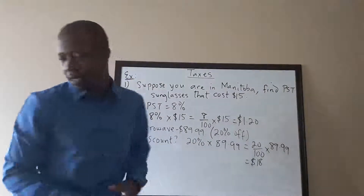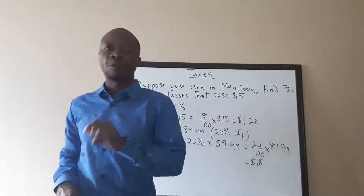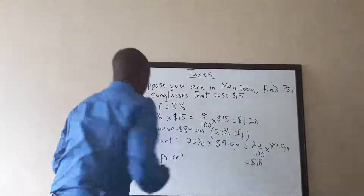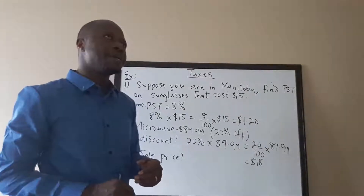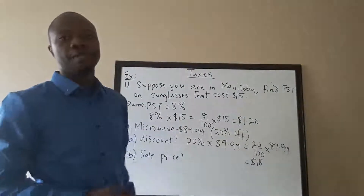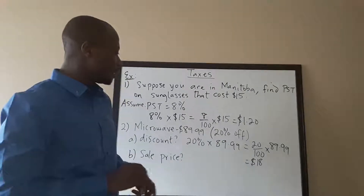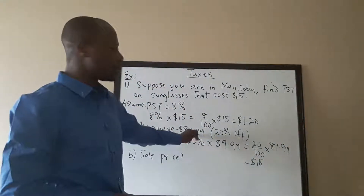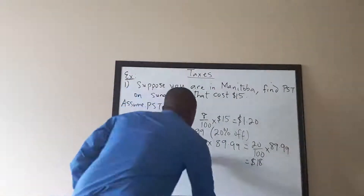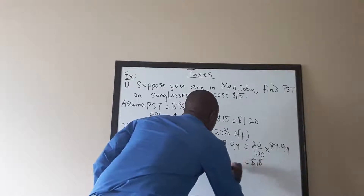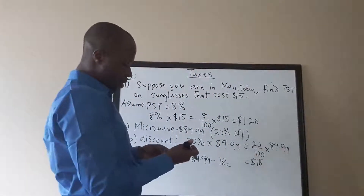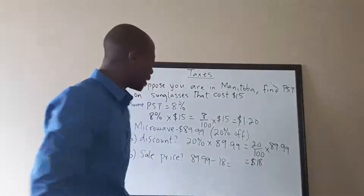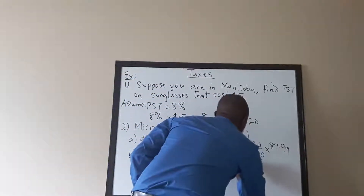Part B says calculate the sale price before taxes — how much you will have to pay for the microwave before taxes. We subtract the discount from the overall price, so the sale price is $89.99 minus $18, which gives us $71.99.